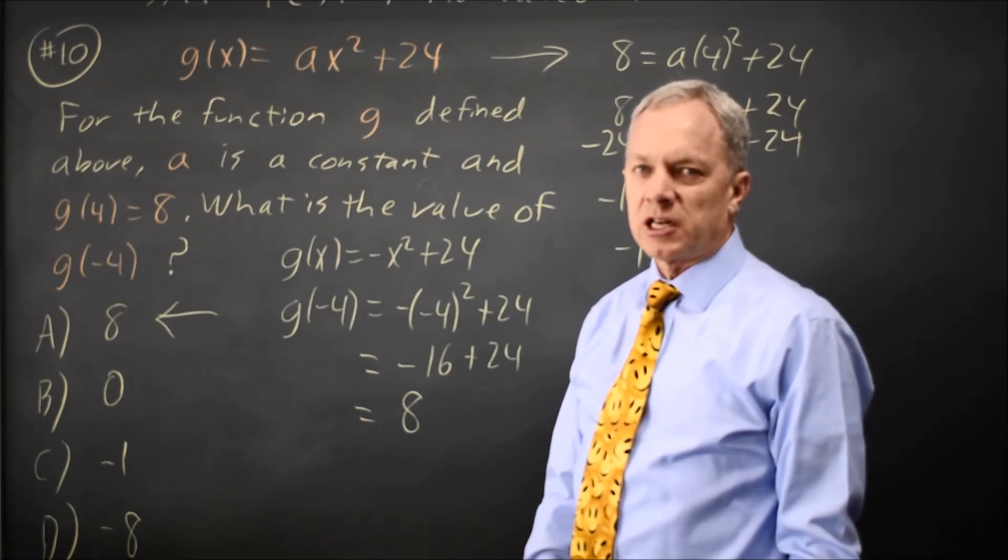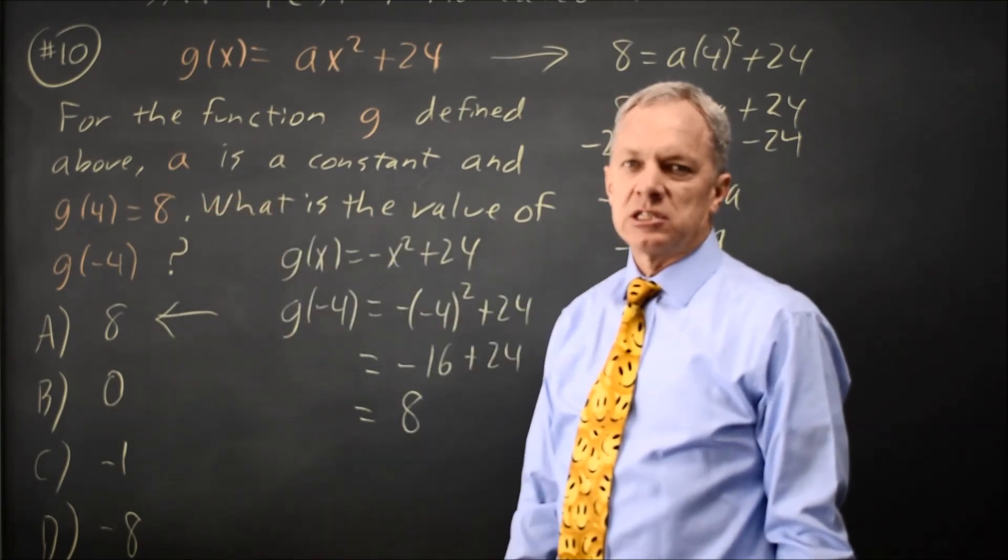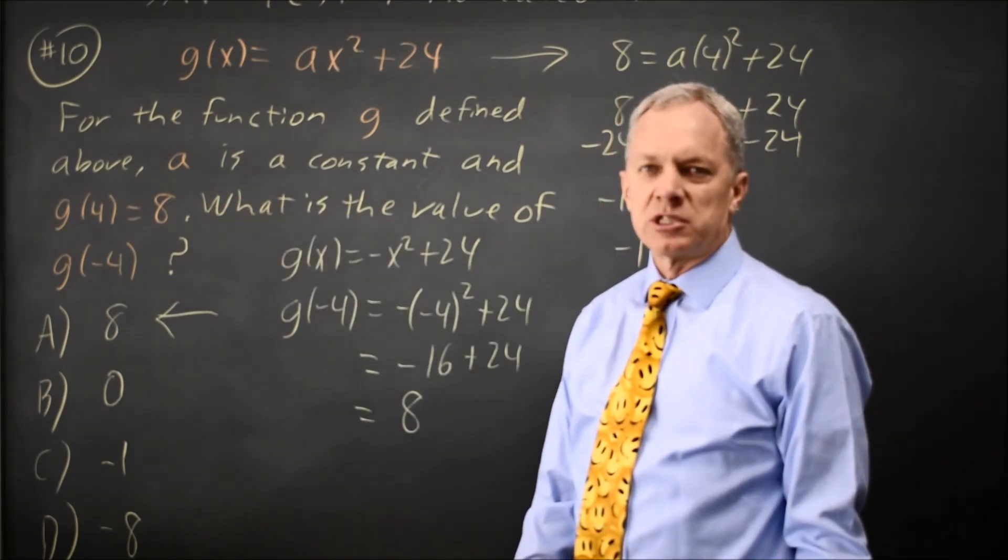so g of negative x equals g of x, because g is even. And so g of negative 4 equals g of 4, which is 8.